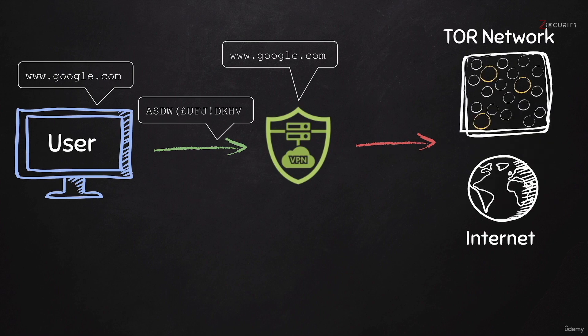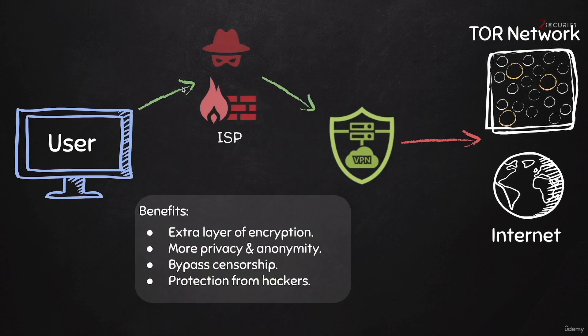This doesn't have to be Google.com — it can be any website or any server on the internet. Or, you can even send that request to the Tor network and access a darknet or a hidden service within the network, or go to the internet after that, improving your privacy and anonymity. Because of the way data is sent in an encrypted manner, this adds an extra layer of encryption, therefore improving your privacy and anonymity.